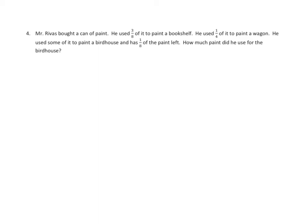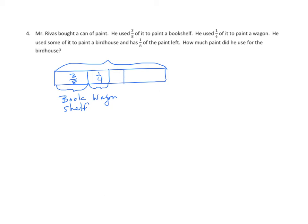Well, we have one whole that represents our can of paint. We know three of the parts, but we don't know the fourth. So we have three-eighths for the bookshelf. We have one-fourth for the wagon. And we have one-eighth left. And we have another amount here for the birdhouse. We'll put a question mark there.